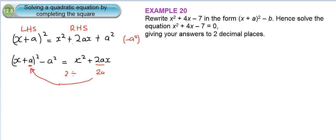Let's quickly do this example. Rewrite x squared plus 4x minus 7 in the form x plus a squared minus b.